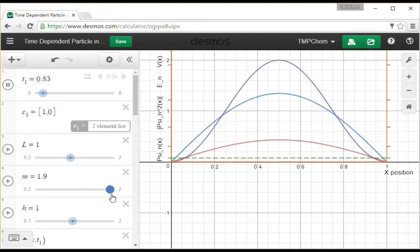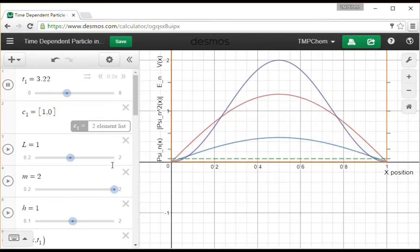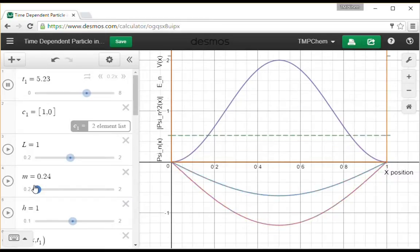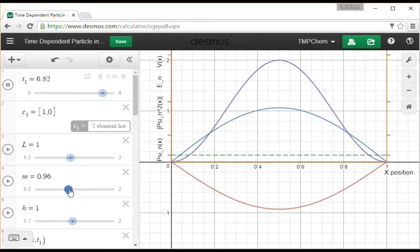Mass of the particle has a similar effect as well. Heavier particles have less quantum behavior. The energy levels stack on top of each other with less separation. Things go slower. And as you get lighter and lighter, there's more quantum behavior as you get very, very light. Energy levels separate and the oscillation gets faster.